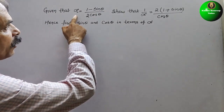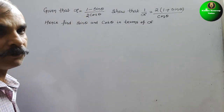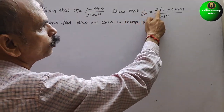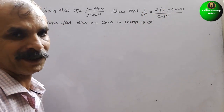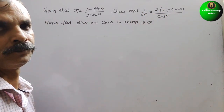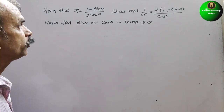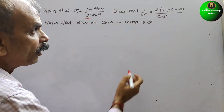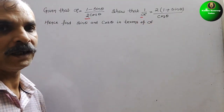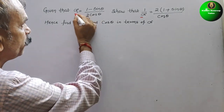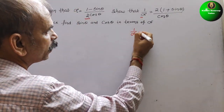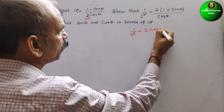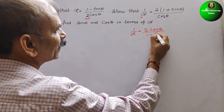The question gives us alpha equal to (1 minus sin theta) divided by 2 cos theta. We need to prove that 1 by alpha is equal to 2 times (1 plus sin theta) divided by cos theta. Taking the reciprocal of alpha, 1 by alpha becomes 2 cos theta divided by (1 minus sin theta).